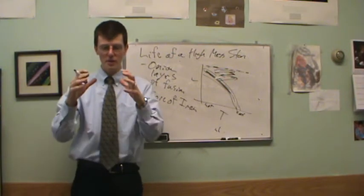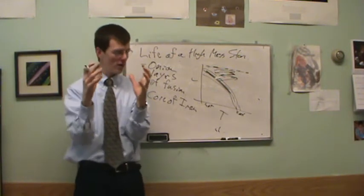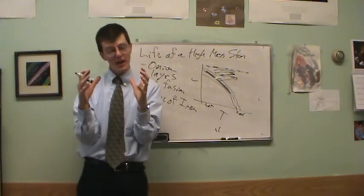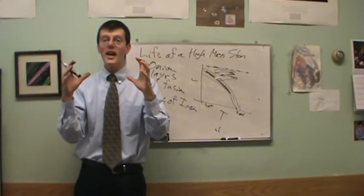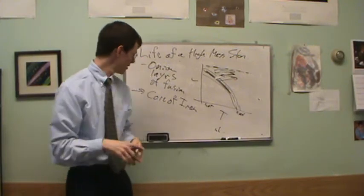Remember, the electron degeneracy pressure that would hold up a star, the core of a low mass star is a white dwarf, cannot stop this. And so it beats electron degeneracy pressure.